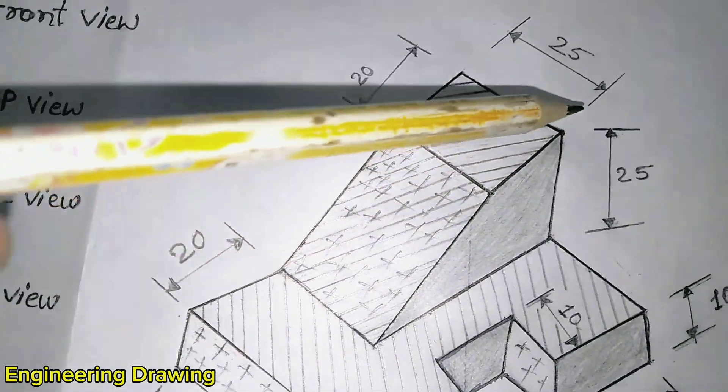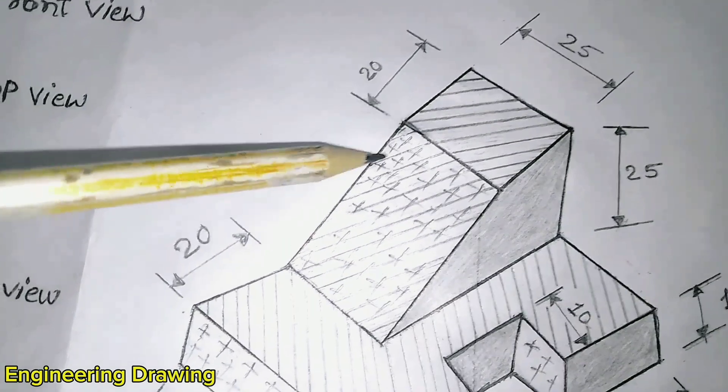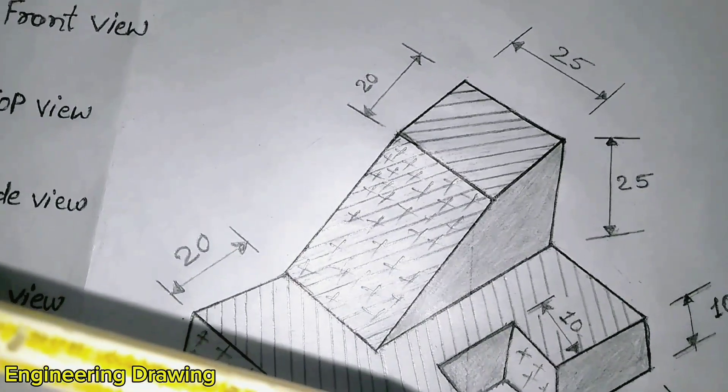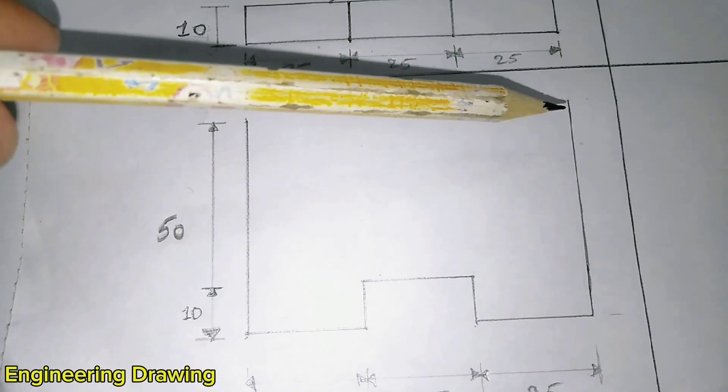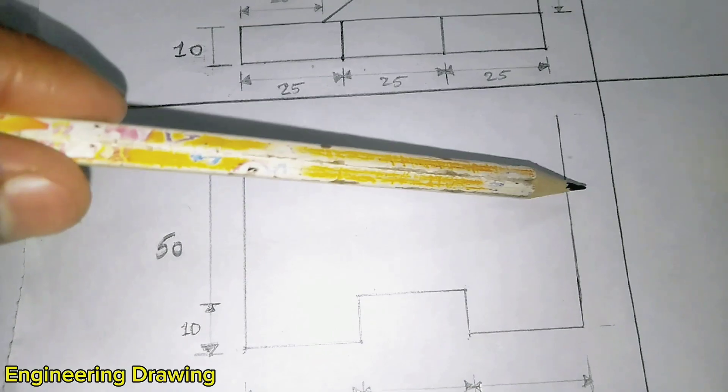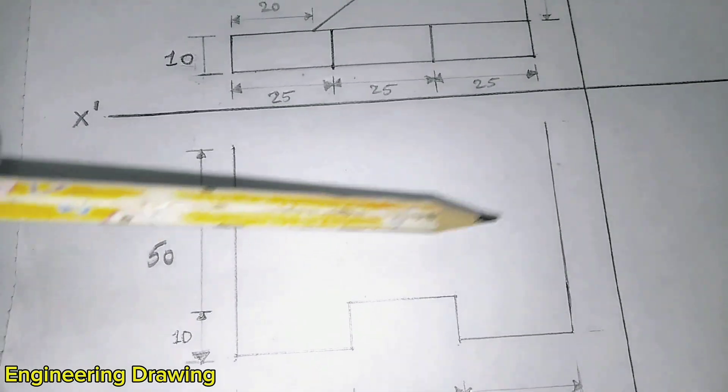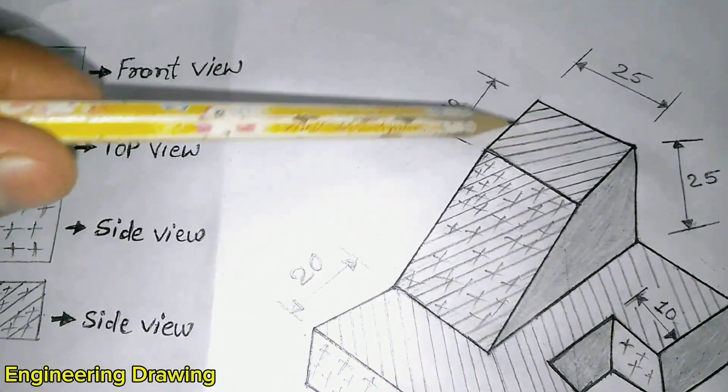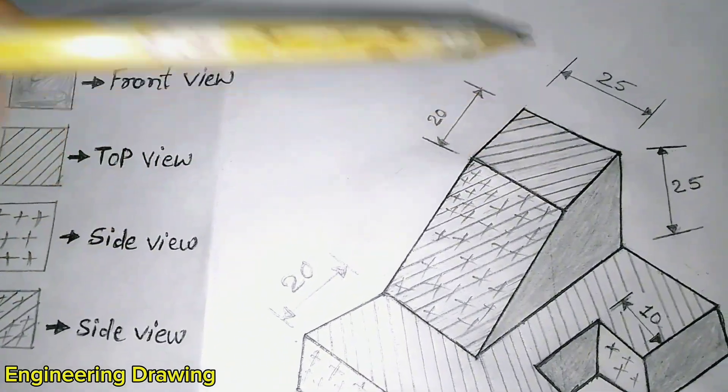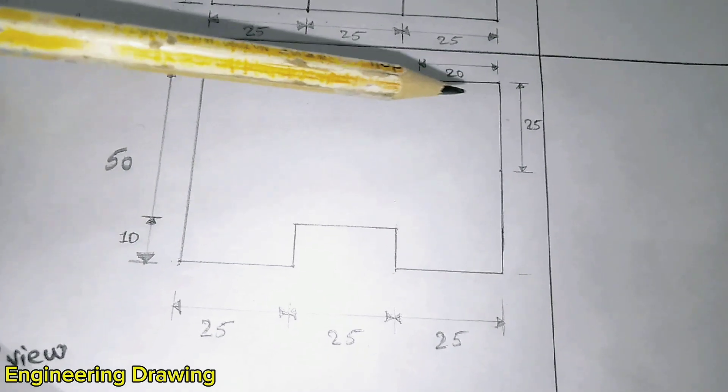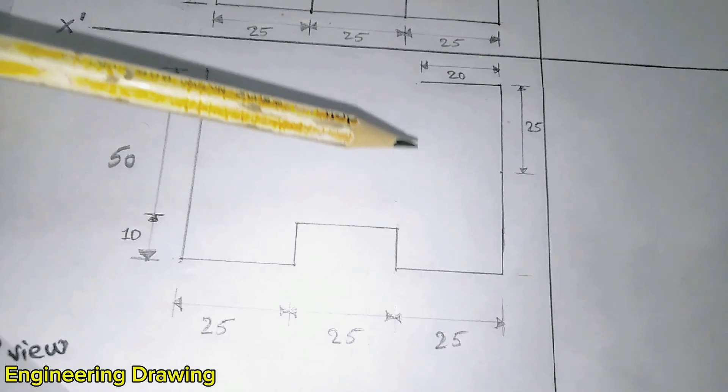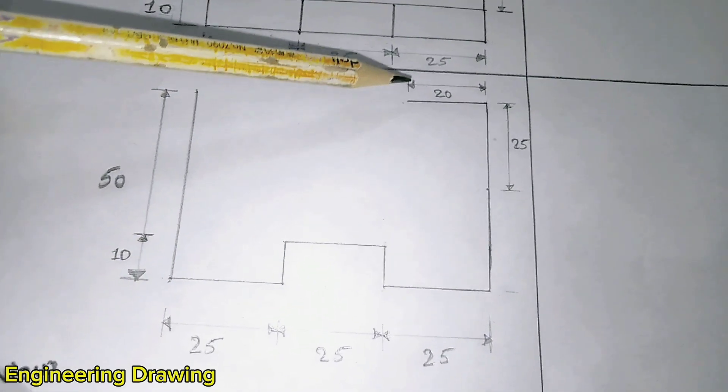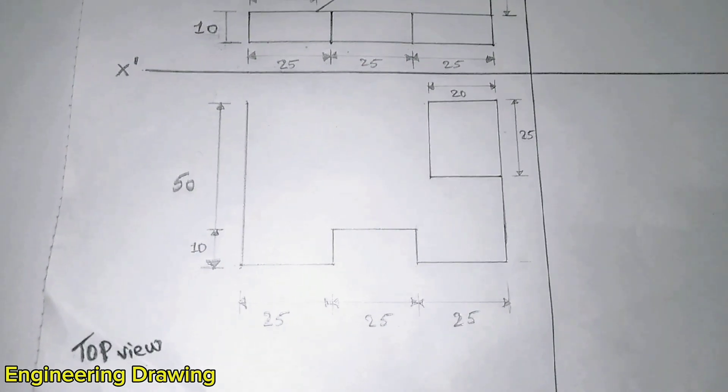Here, you can see 25 mm by 20 mm block. Now, the 25 mm by 20 mm block of its top view has to be drawn.